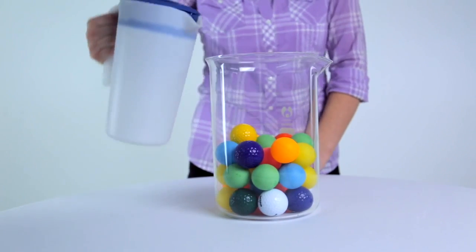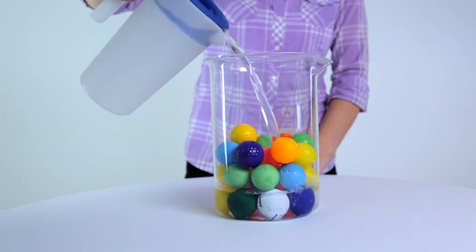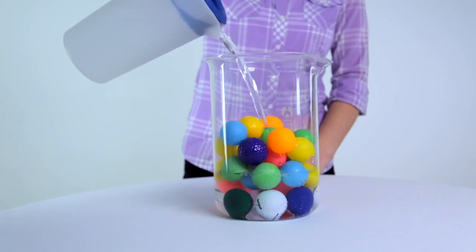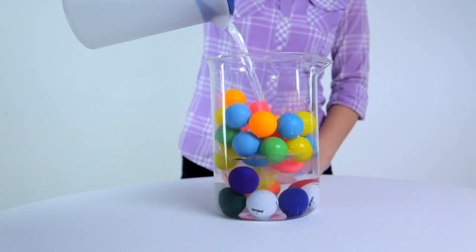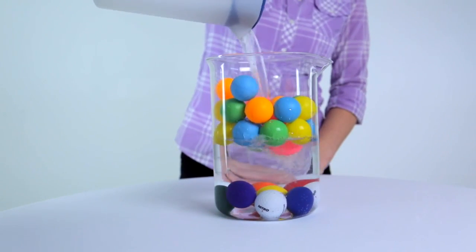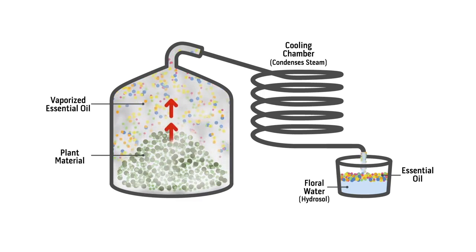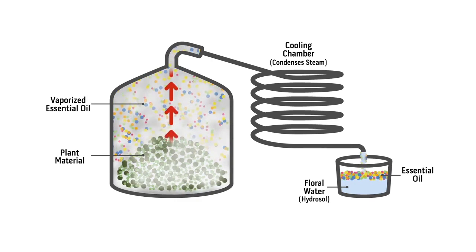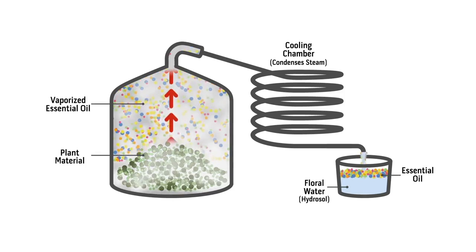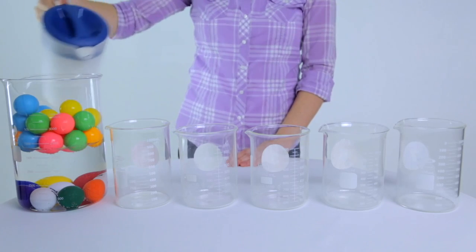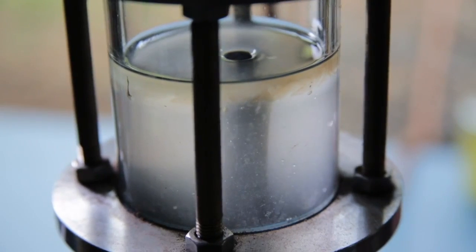Now water is poured into the beaker representing the process of steam distillation. Only certain balls rise to the surface just as only volatile aromatic compounds are collected during steam distillation. The floating balls represent the pure essential oil yield.